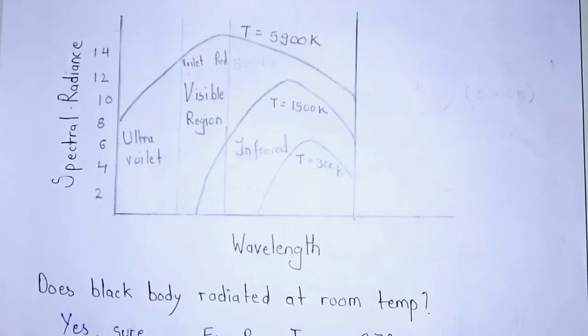This is the graph showing how a black body is emitting energy which is directly proportional to the rise in temperature.